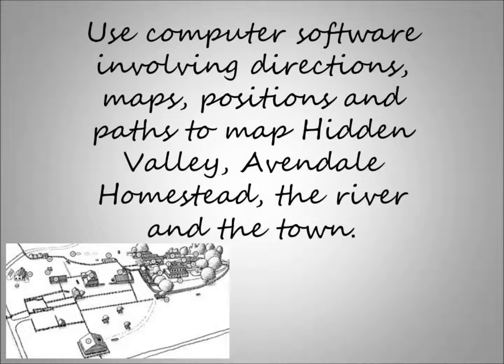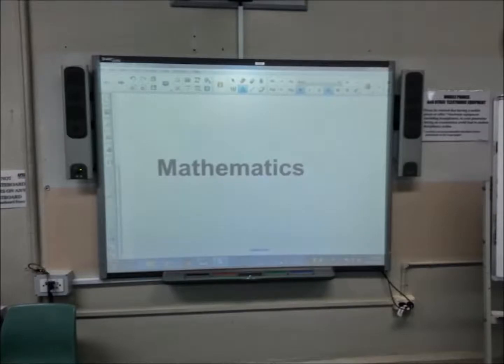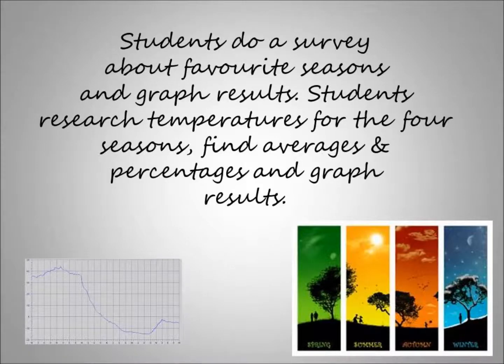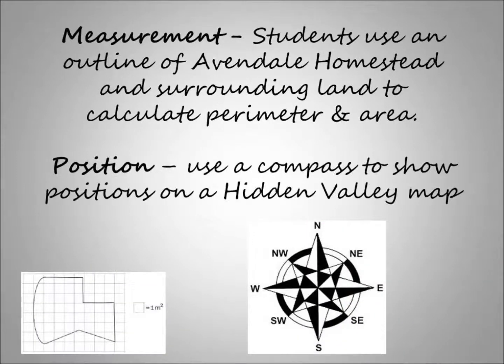Students can use computer software to make maps of Hidden Valley and Avondale Homestead. They can do surveys about favourite seasons and graph the results. They can research temperatures, find averages, graph results, measure land and perimeter of Avondale Homestead, and use a compass for positions in Hidden Valley.